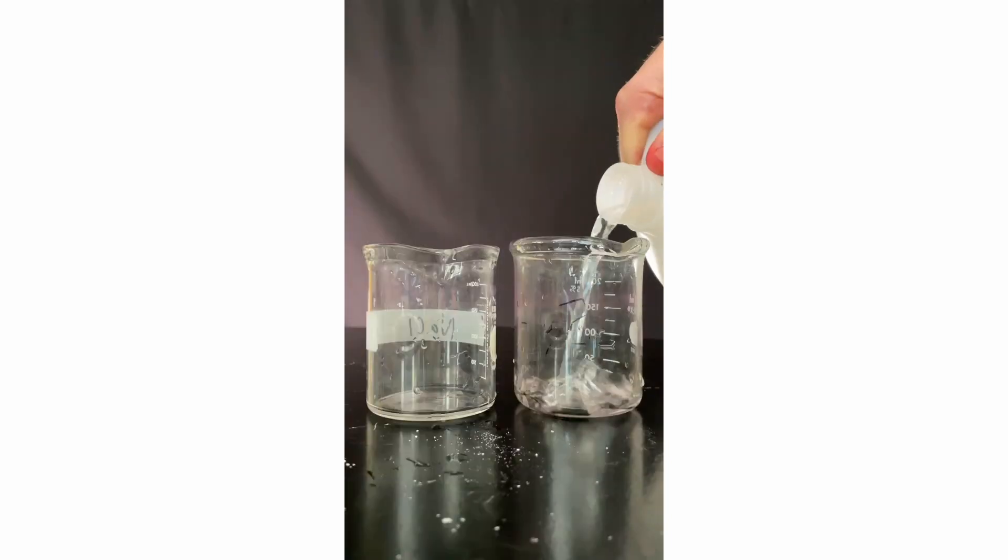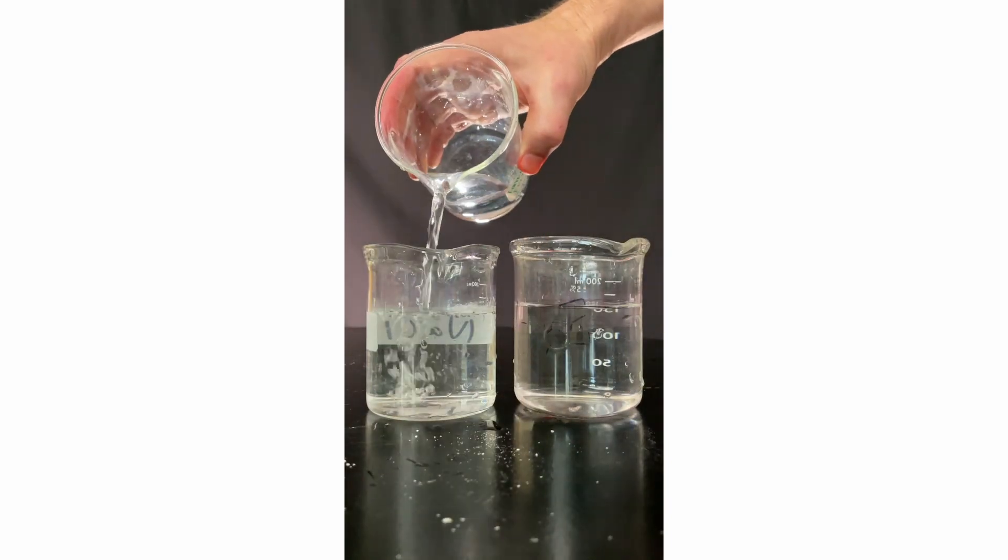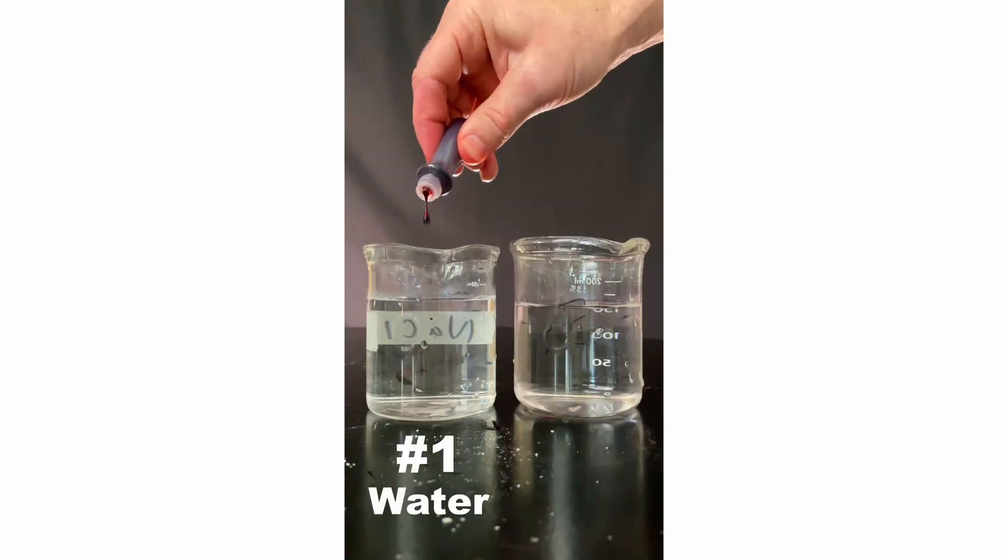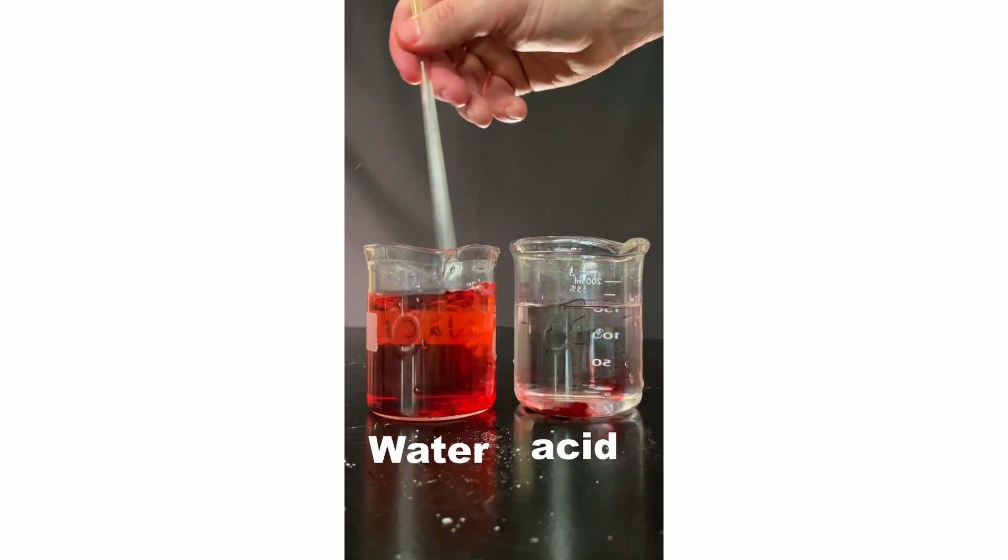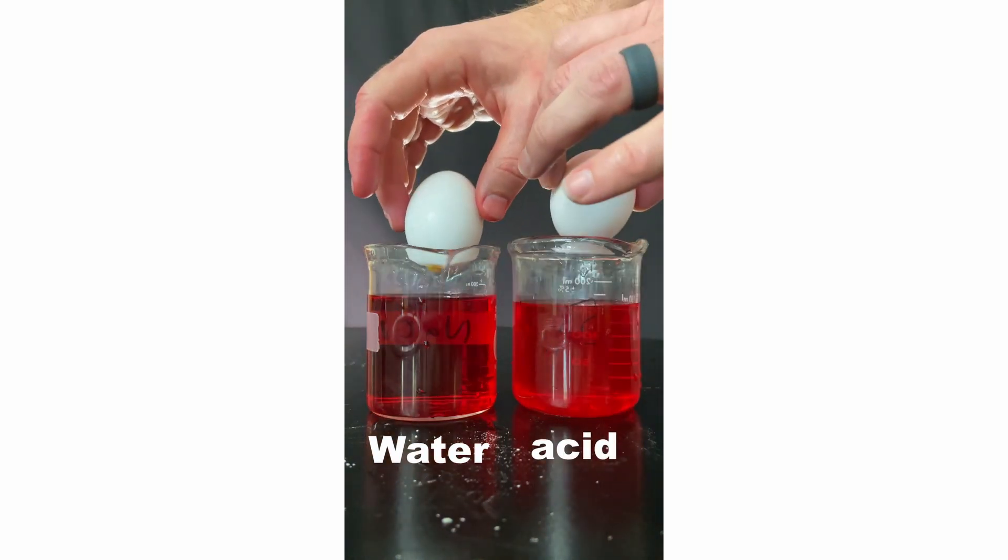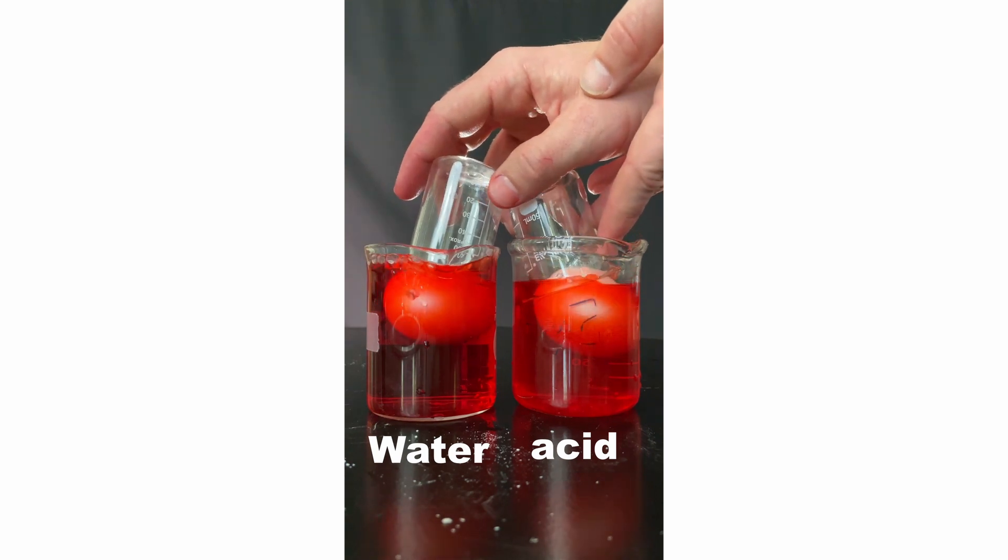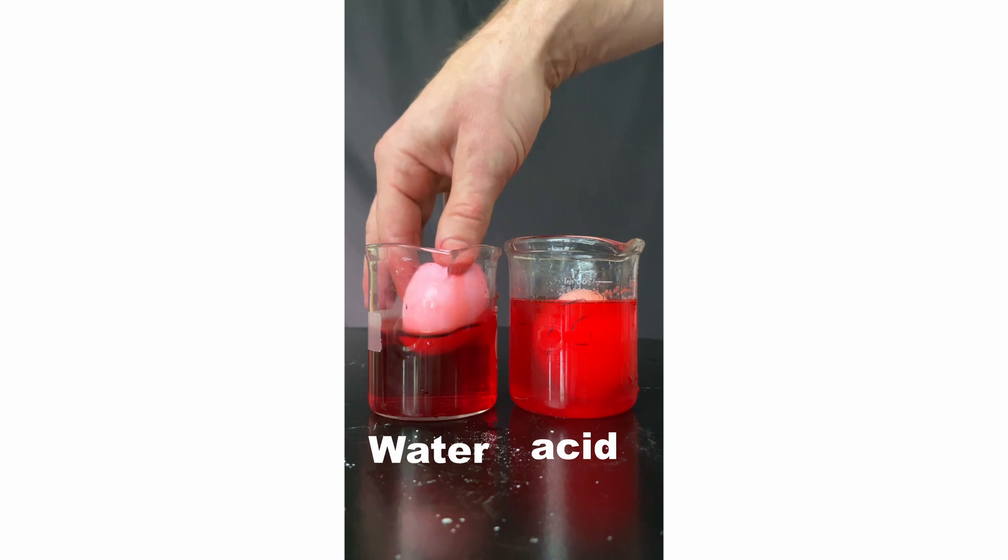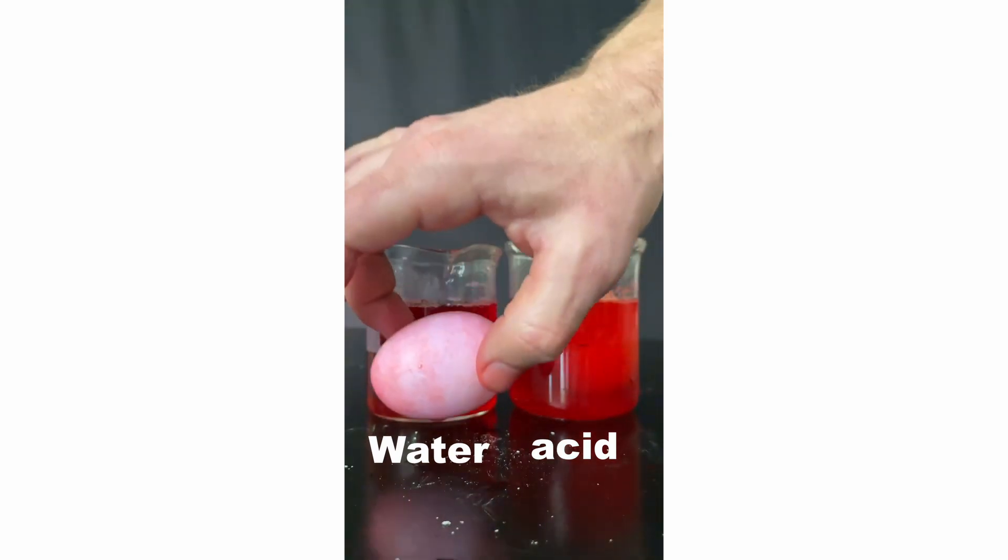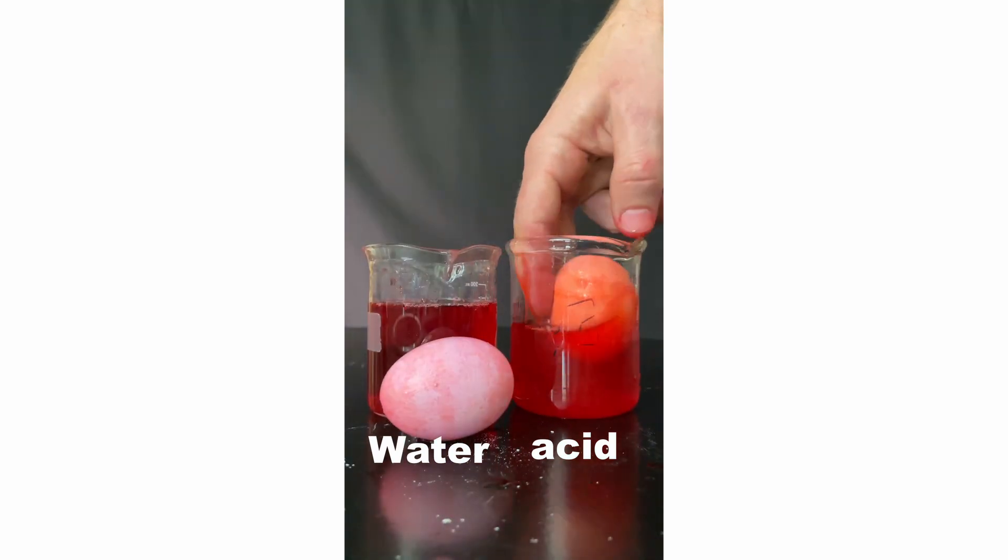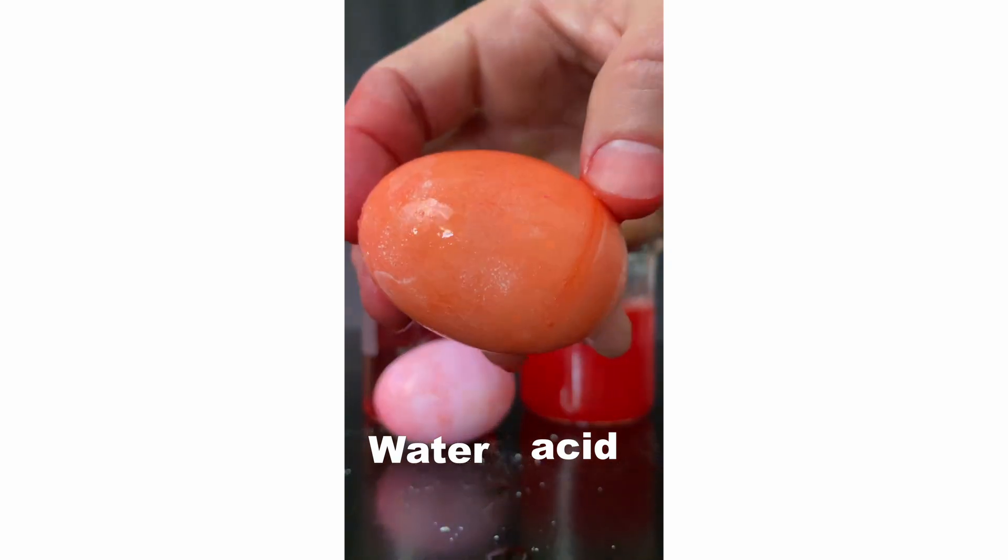Get some vinegar. Put it in one beaker. Tap water in the other. Get red dye and add equal amounts to both. Drop in the eggs. Which one will color the eggs better? I'll let them sit about three minutes. When we take them out, the water shell looks like this. The acidic shell looks like this. Which one do you like best?